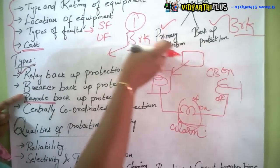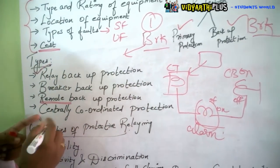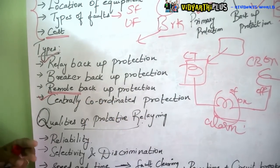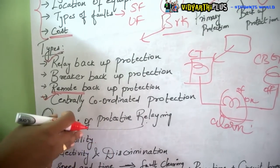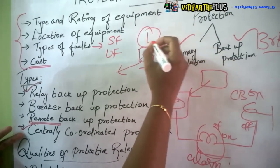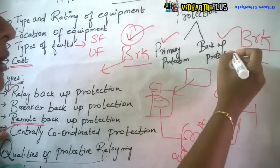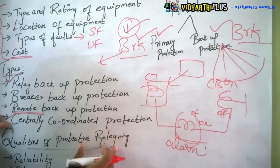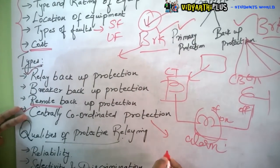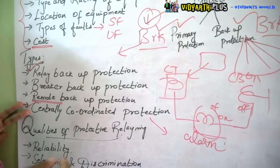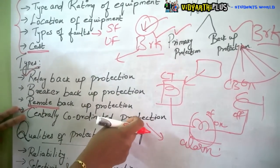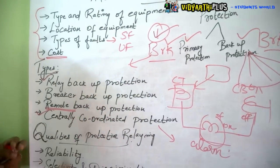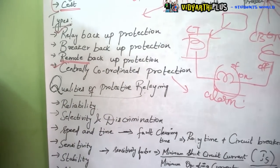In remote backup protection, the equipment will be placed in one location and the breaker in a different location. In centrally coordinated protection, all the relays are coordinated by a central system. For primary protection you have a separate breaker, and for backup protection you have different breakers, but all are centrally coordinated from a main system — similar to how many computers are controlled by a main server.